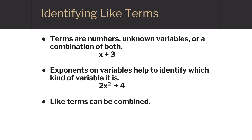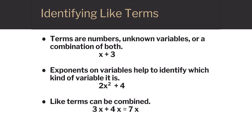Like terms can be combined. For 3x plus 4x, the 3x and 4x are separated by a plus sign, and they could be combined to be 7x. Here are some examples of like terms.